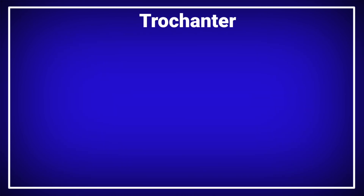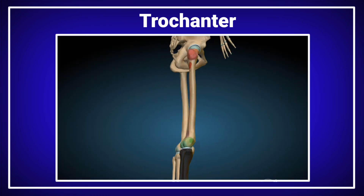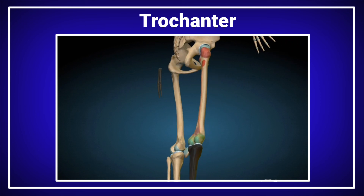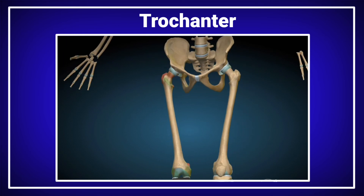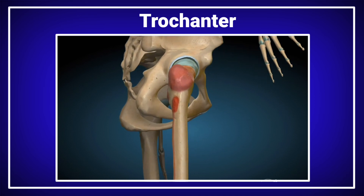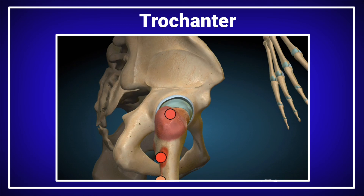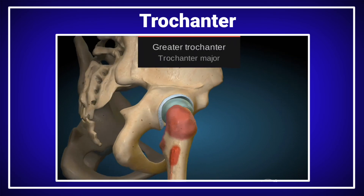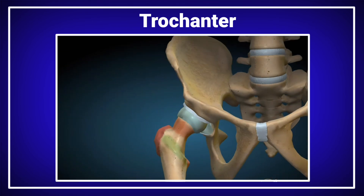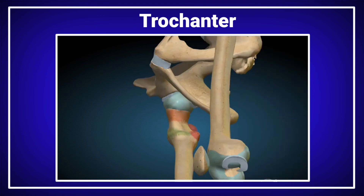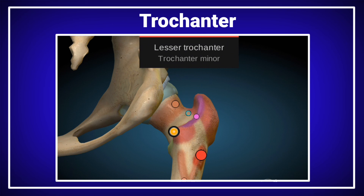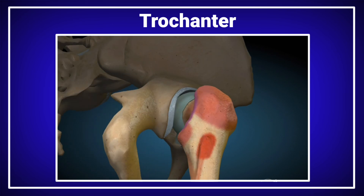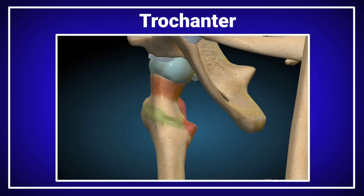The trochanter — trochanters are restricted to the femur bone of the lower limb, meaning they are present only on the femur. There are two types of trochanters on the femur: the greater trochanter, located on the lateral aspect of the femur and greater in size, and the lesser trochanter, which is lesser in size. The greater and lesser trochanters collectively represent the rounded elevation.